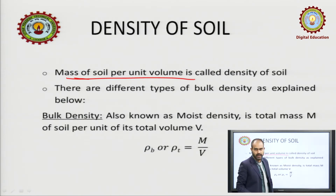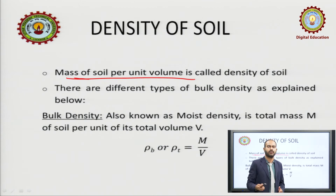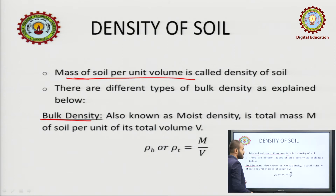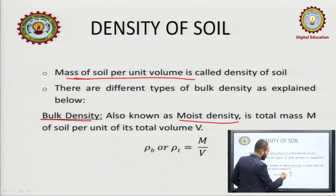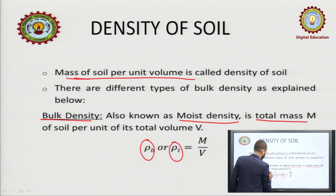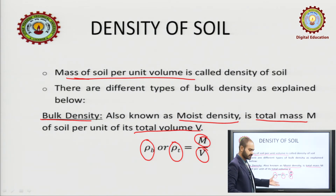It is not that we have only one kind of density in soil or in geotechnical engineering. We will continue with different types of bulk density and all. Bulk density, also known as moist density, is represented by rho_b or rho_t. It is the ratio of total mass to total volume.